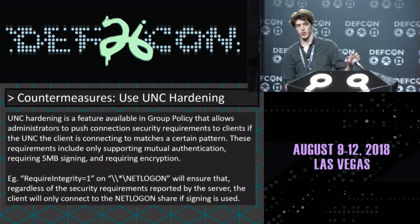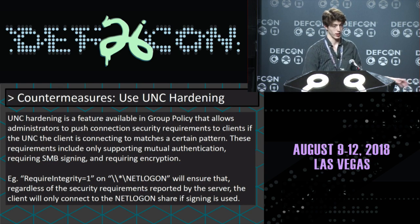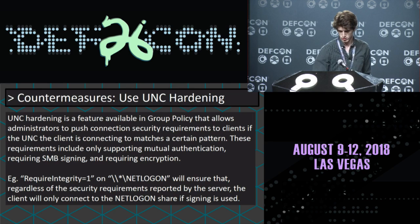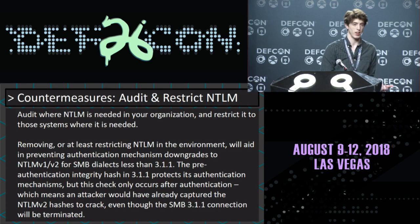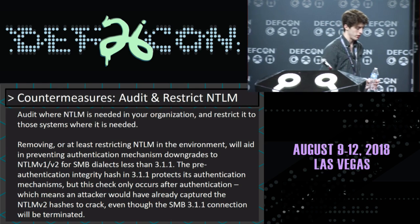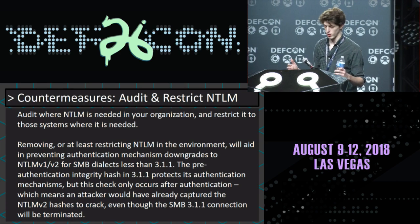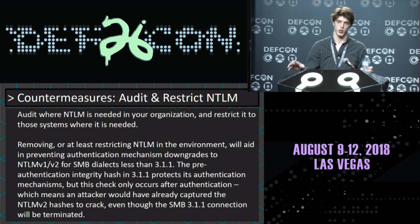You can lock it down on the client side and prevent them from connecting to rogue servers by using UNC hardening, saying: if you're connecting to this server or a server that looks like this, do XYZ. I hate to say this as a pen tester who loves NTLM, but NTLM really is outdated — it was made near the 90s. If you can, run through audits in your organization to see where NTLM is used. If you can't disable it across the org, find out where it's used and restrict it just to those systems.